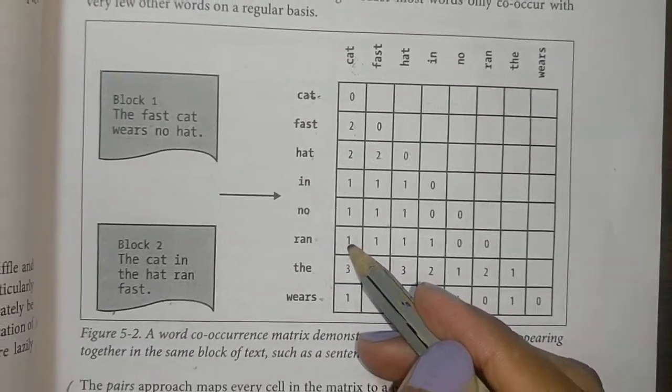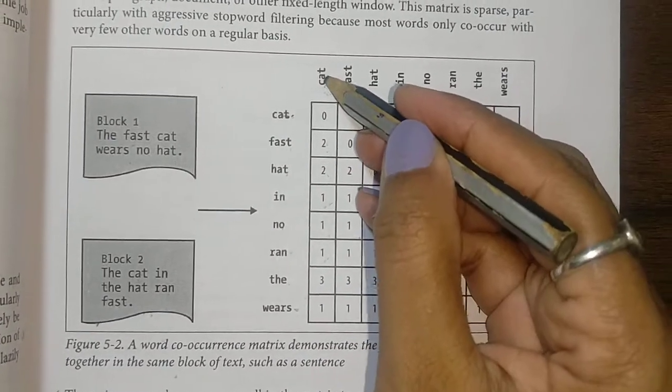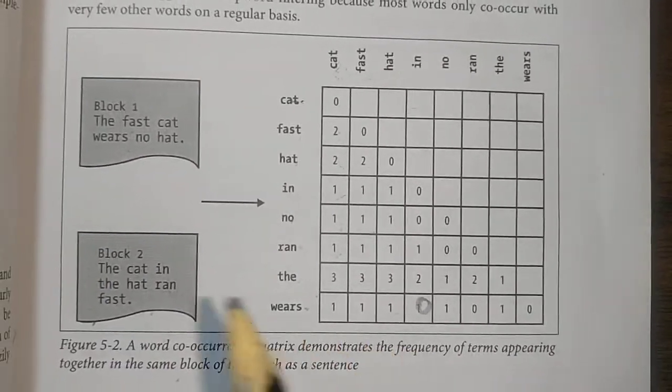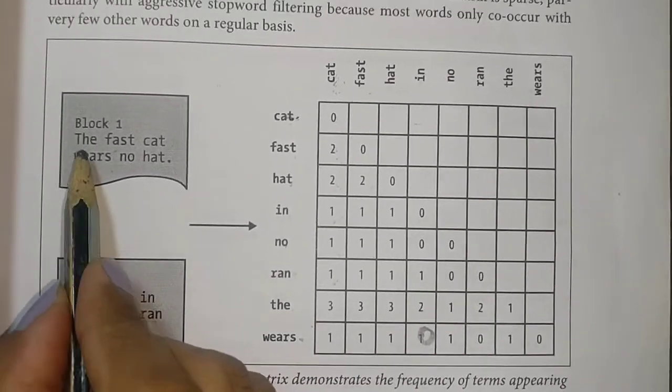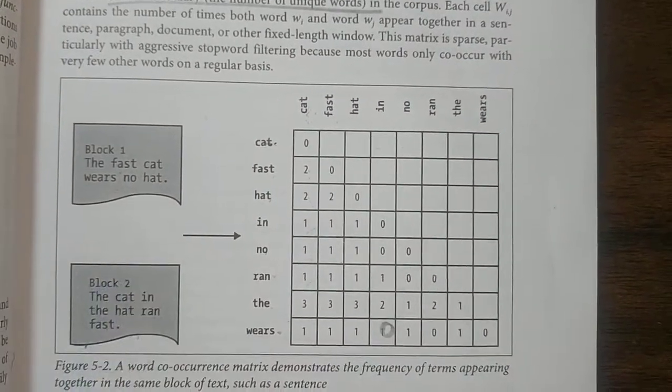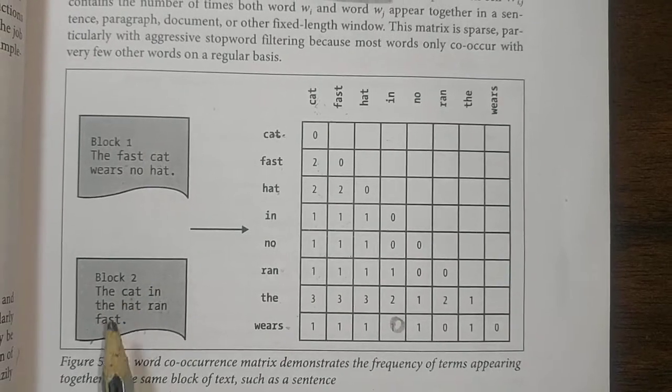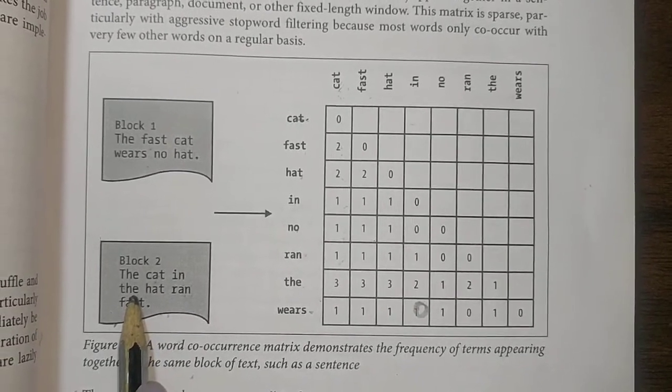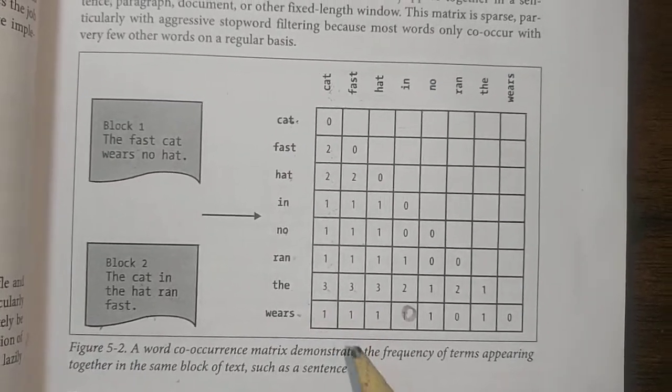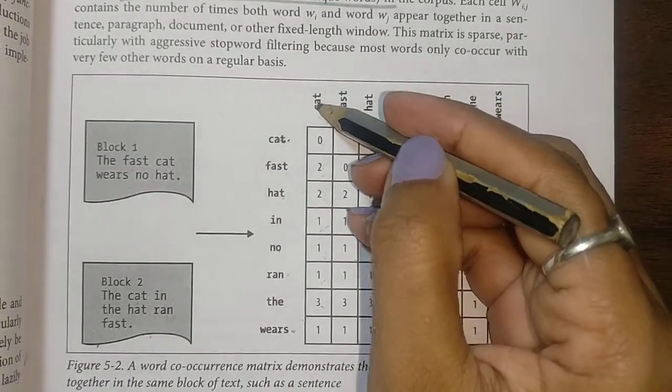Next, cat and the: let's look at how many times 'the' and cat occur together. Here it occurs, this is the first occurrence, and here second, and again this is the third one. That's why we've written cat and the as three. Next, cat and wears: cat and wears only occurs once together.